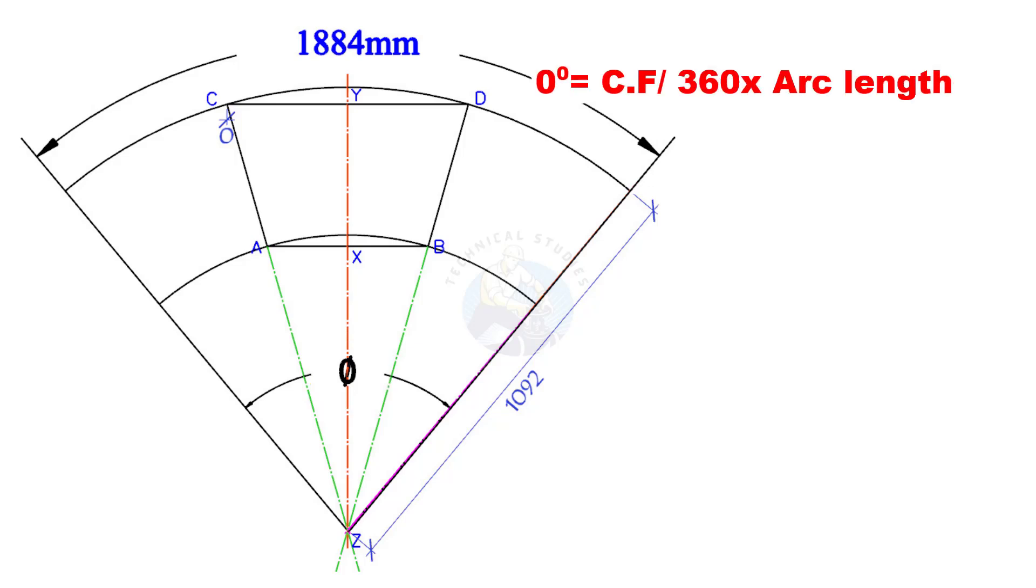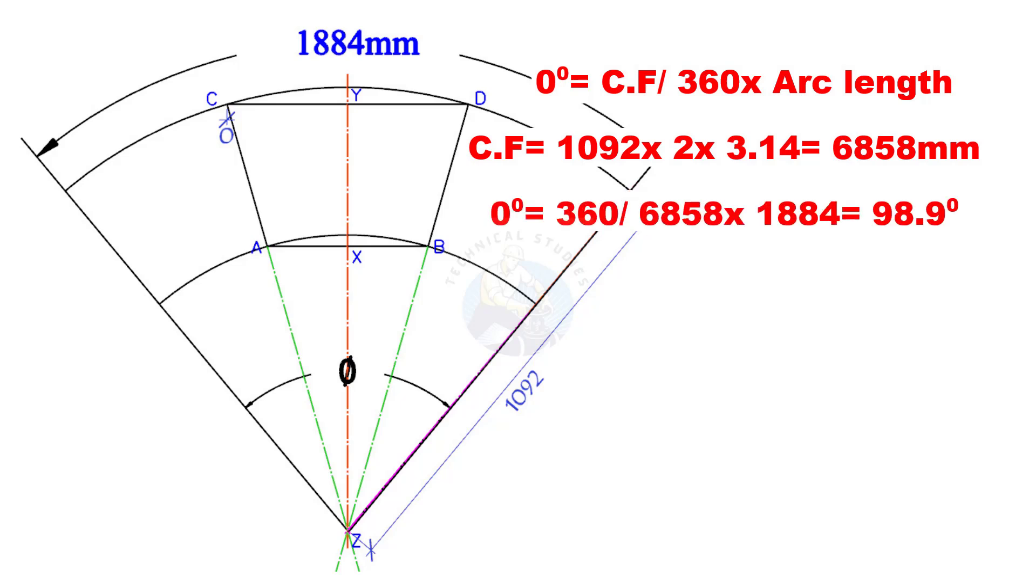To calculate the including angle, divide the overall circumference of the cone by 360, and multiply by the arc length. Calculate the circumference, divide 360 by the circumference, and multiply by the arc length. Now you have the including angle.